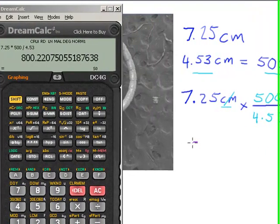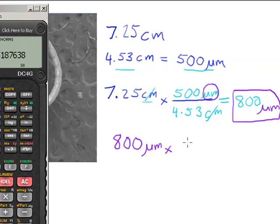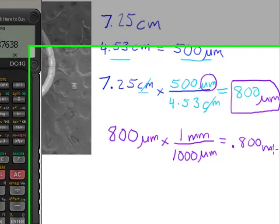I also know that I could convert this to millimeters: 800 micrometers times, I know that there are 1,000 micrometers in 1 millimeter, so that's equal to 0.800 millimeters.